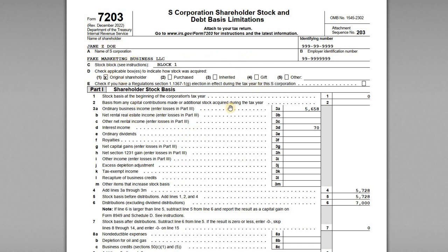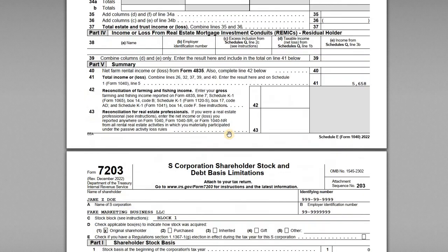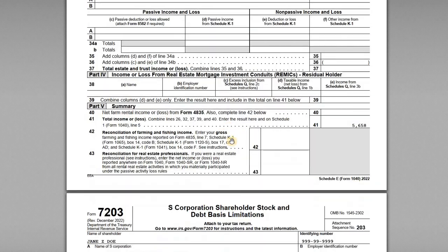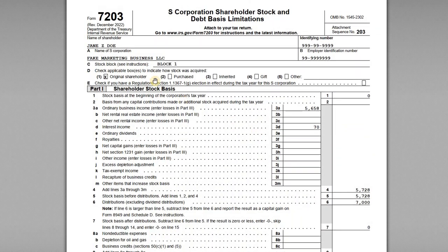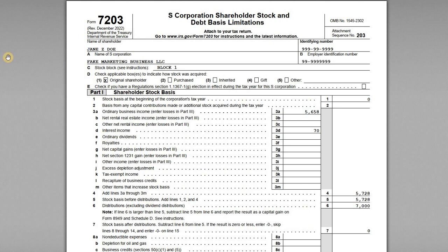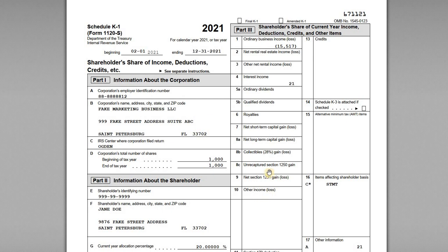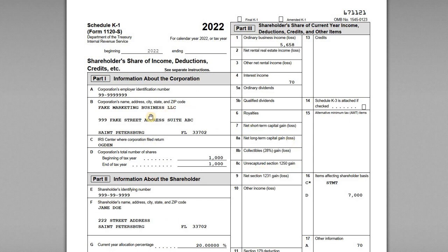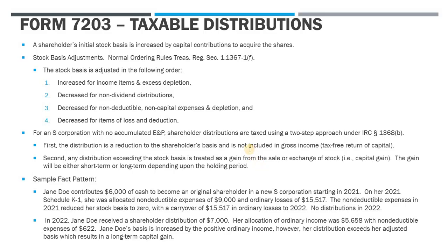I have the 7203 for Jane here — this is for 2022 and it's part of her full return. I've got Schedule E and the rest of the 1040. I also have the 2021 K-1 for Jane, which is from last year when she first became a shareholder, as well as the 2022 Schedule K-1 from the business. And I have a slide covering the rules and the fact pattern. Let's look at the rules first and then get into the returns and forms themselves.